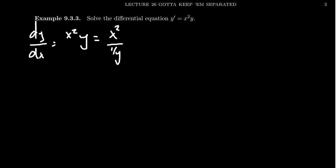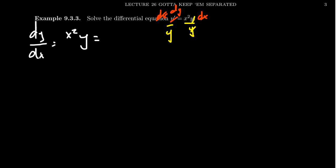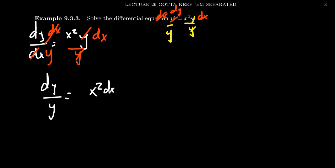The idea is to take the equation, divide both sides by y — the y's cancel — and multiply both sides by dx. You can treat this like an equation of any other kind. So we separate the variables and end up with dy over y on the left and x squared dx on the right. We've separated the variables: the left-hand side only consists of y including the dy, and the right-hand side only consists of x including the dx.